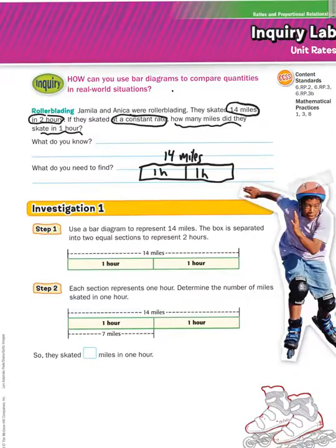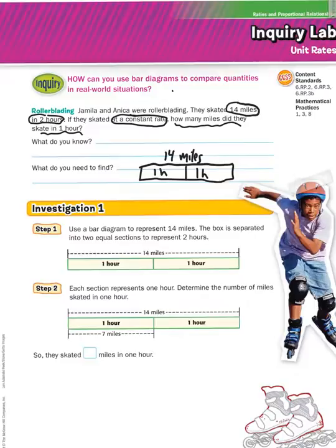In step two, it says each section represents one hour. Determine the number of miles skated in one hour. If the whole thing is 14 miles and you're splitting it into two, splitting means division. So, if you divide 14 by two, you would get seven miles. They skated seven miles in one hour.